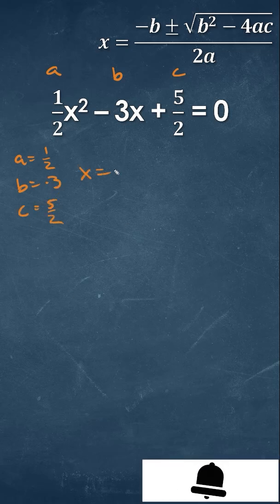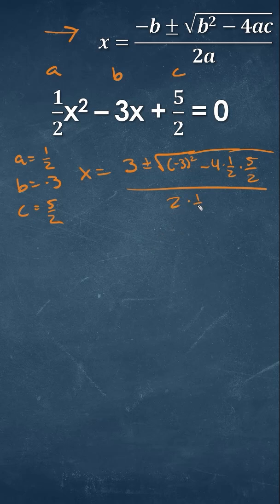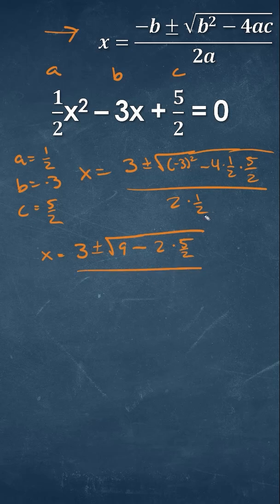If we plug that into our equation for the quadratic formula, we can get negative of negative 3, which is going to be positive 3, plus or minus the square root of negative 3 squared minus 4 times 1 half times 5 over 2, all over 2 times 1 half. We can simplify this: 4 times 1 half gives us 2, times 5 over 2, all over 2 times 1 half, which will be 1.